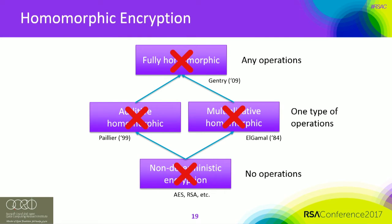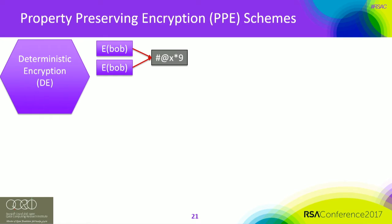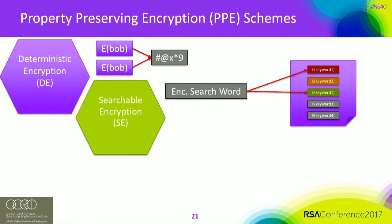Since homomorphic encryption doesn't work for our use case, the other option is property-preserving encryption (PPE) schemes. The idea is to encrypt data in a way that preserves some properties. I'm going to talk about three popular PPE schemes used both in academia and industry, and then discuss what kind of security guarantees they provide when put into real systems. The first type is deterministic encryption: when you encrypt the same plaintext twice with the same key, you always get the same ciphertext, which allows efficient equality searches.